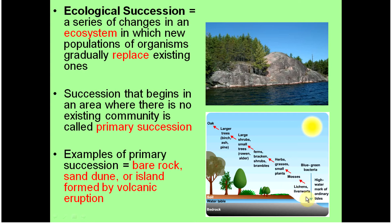This shows succession, down at the bottom, starting with bedrock, adding some very simple organisms like lichens and mosses, and then we start to add larger herbs and grasses, bushes and shrubs, and then we start to get some of these trees.